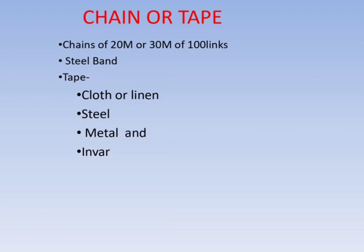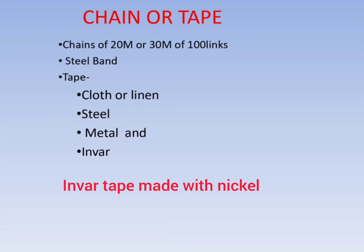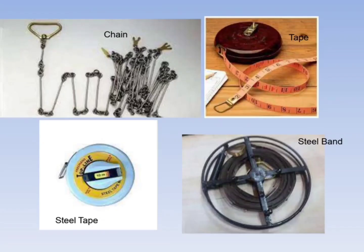Steel band is similar to tape with graduations and without a case. Cloth tapes are less durable; steel tapes are widely used. Invar tape has the least variations due to temperature changes and is made up of Invar. Chains of 20 meters are generally used and are called Gunter's chain — they measure 66 feet, approximately 20 meters, and have 100 links, each link measuring 20 centimeters.